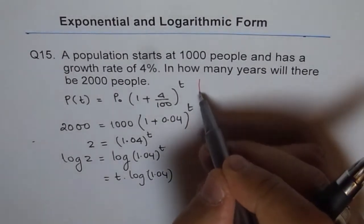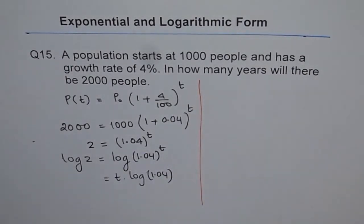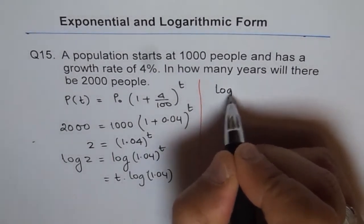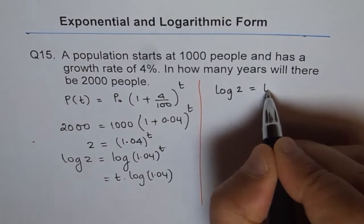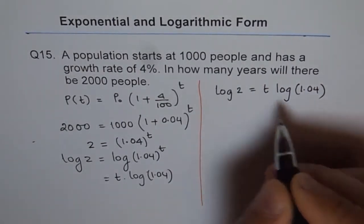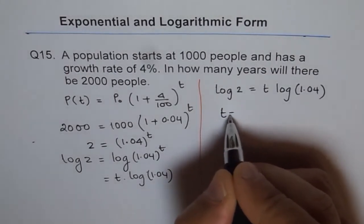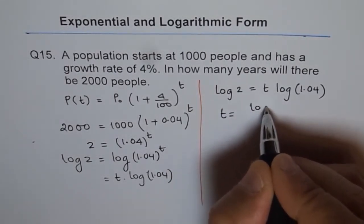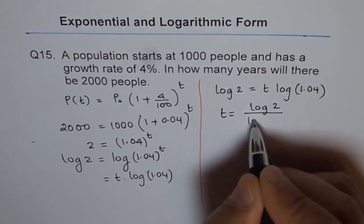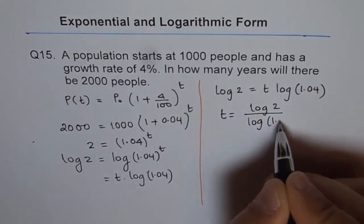Let's do the final calculations on the right side. From here, let me write the equation first. So we have log of 2 equals to t times log of 1.04. So t is equals to log of 2 divided by log of 1.04.